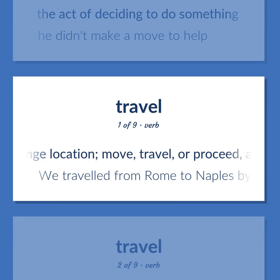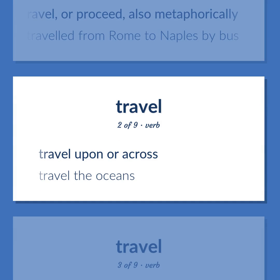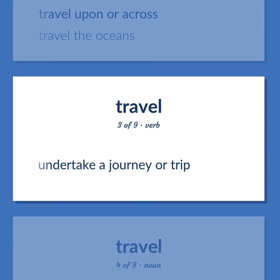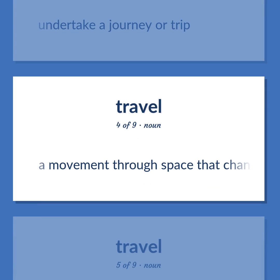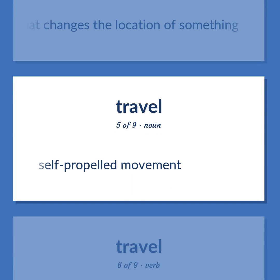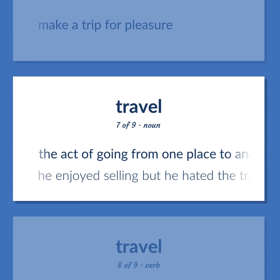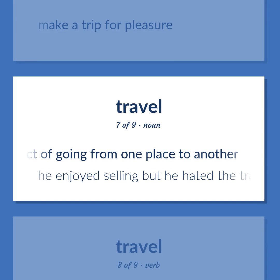Change location; move, travel, or proceed, also metaphorically. We traveled from Rome to Naples by bus. Travel upon or across. Travel the oceans. Undertake a journey or trip. A movement through space that changes the location of something. Self-propelled movement. Make a trip for pleasure. The act of going from one place to another. He enjoyed selling but he hated the travel.